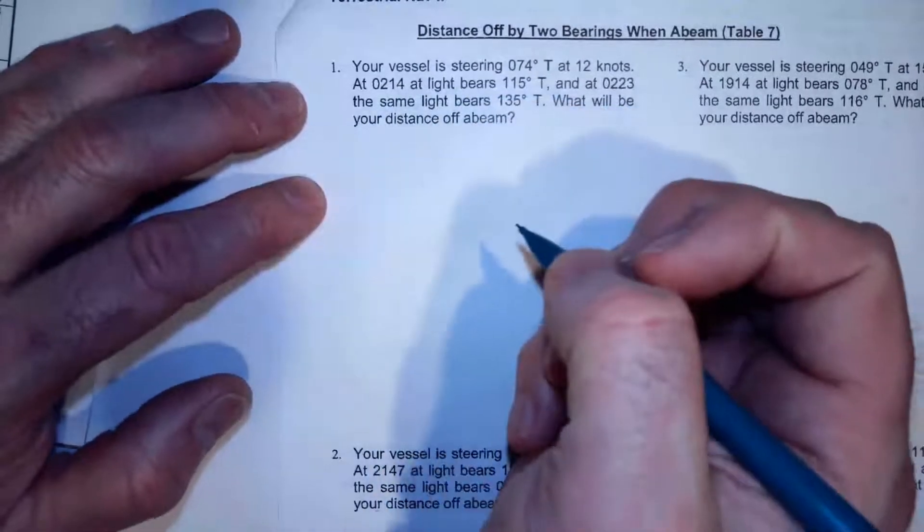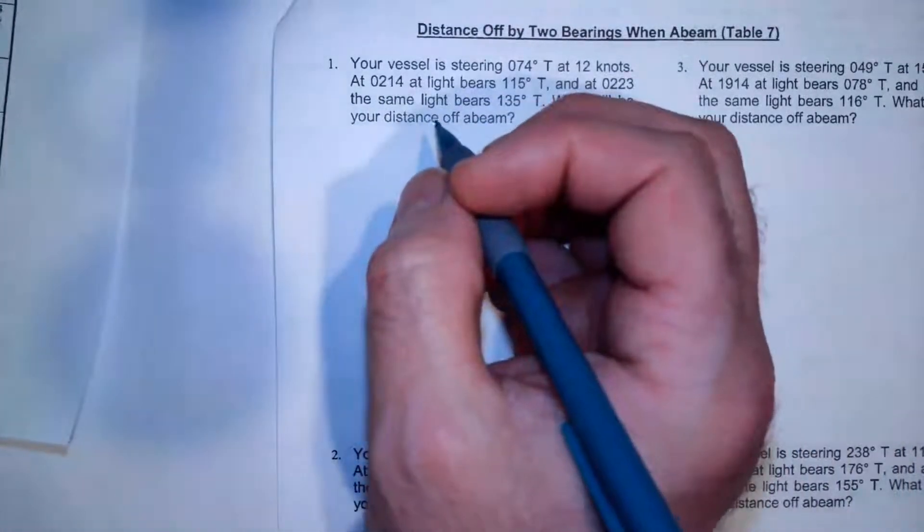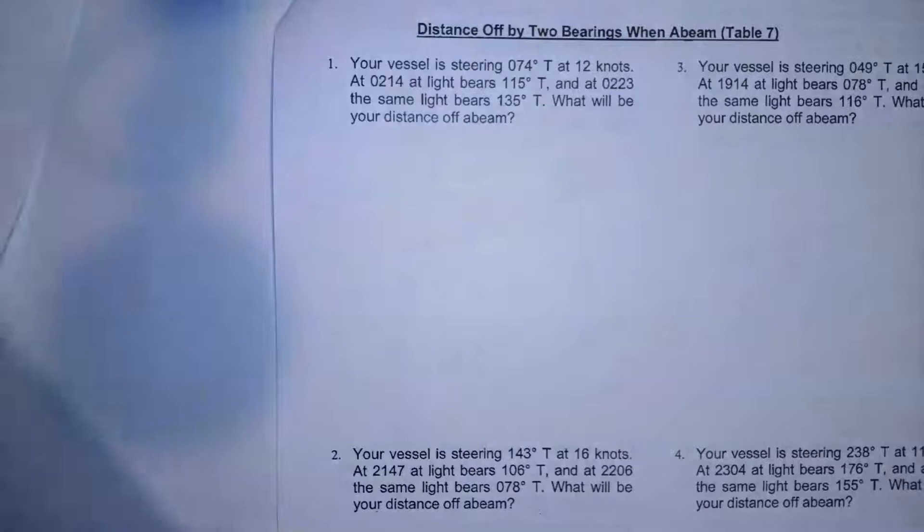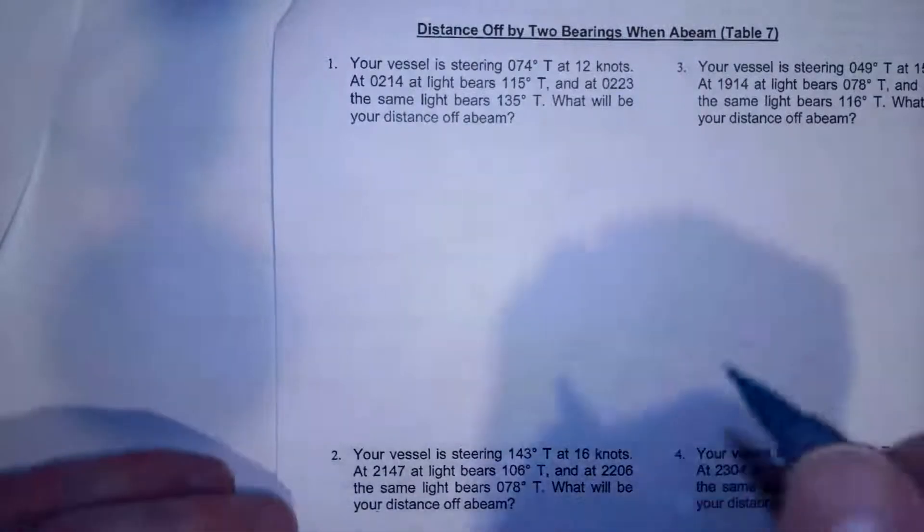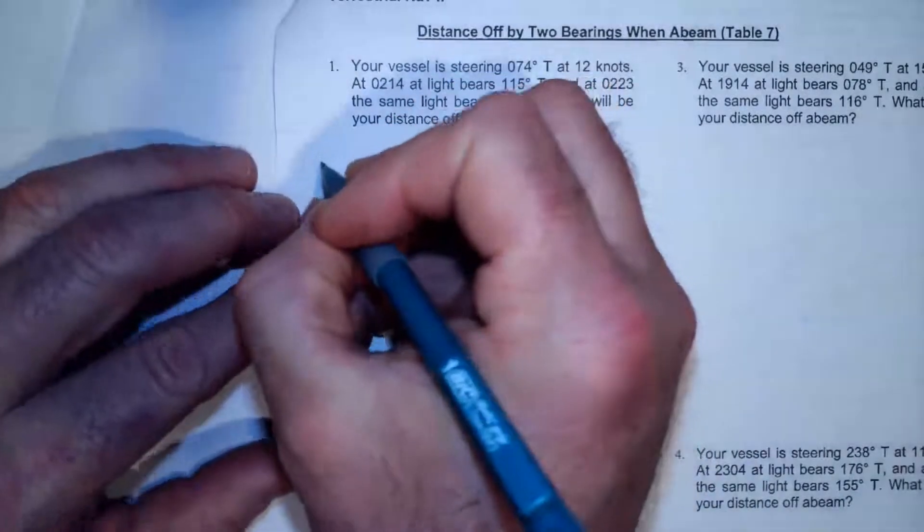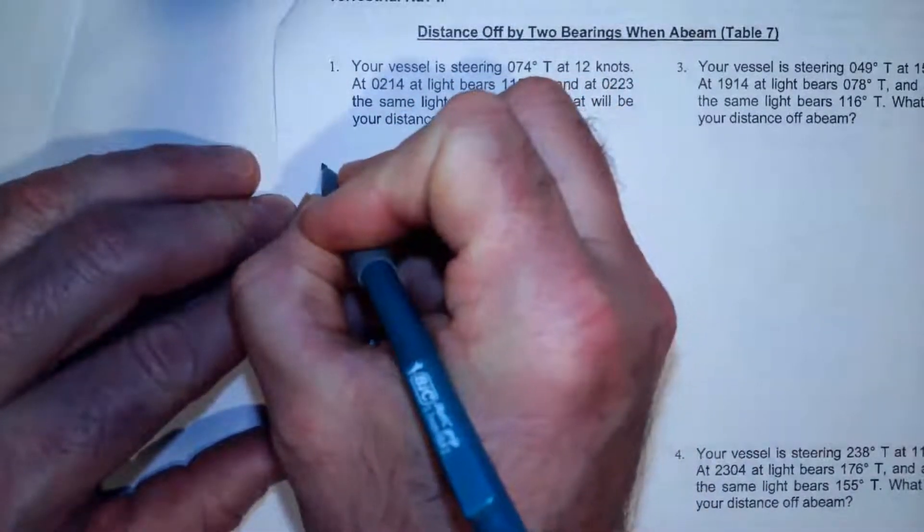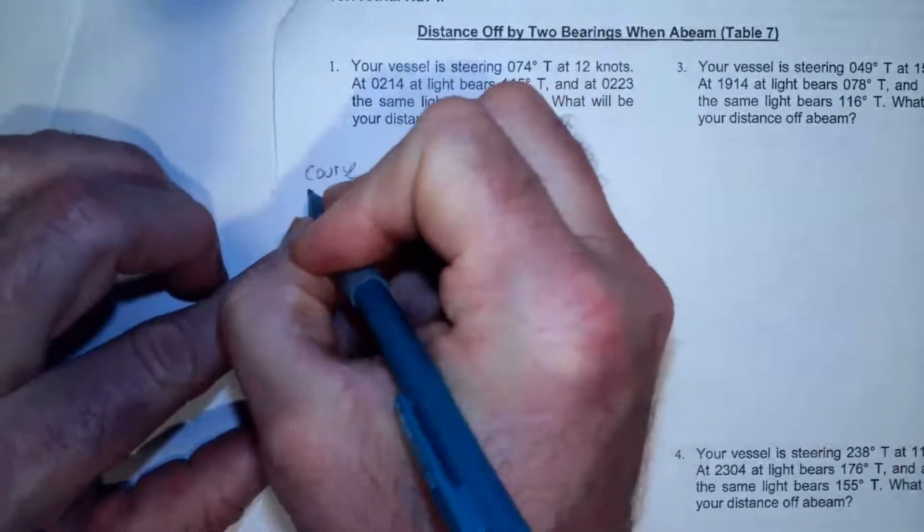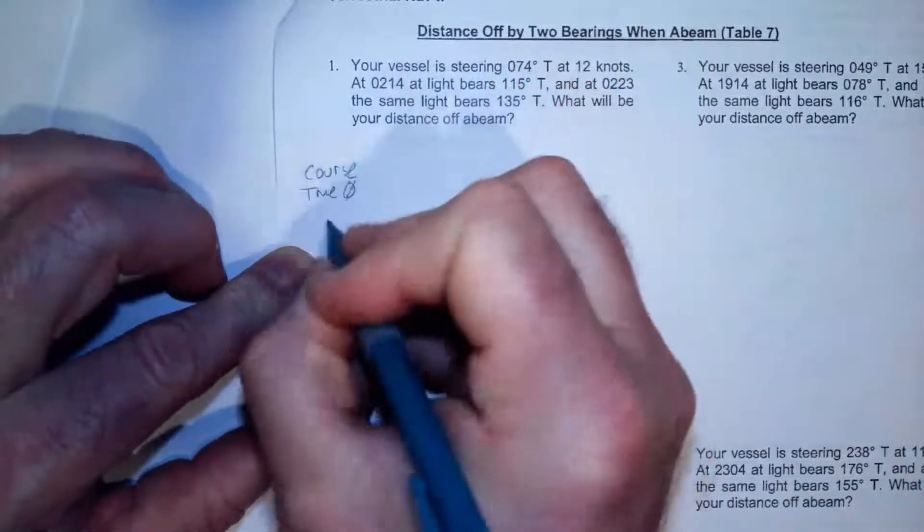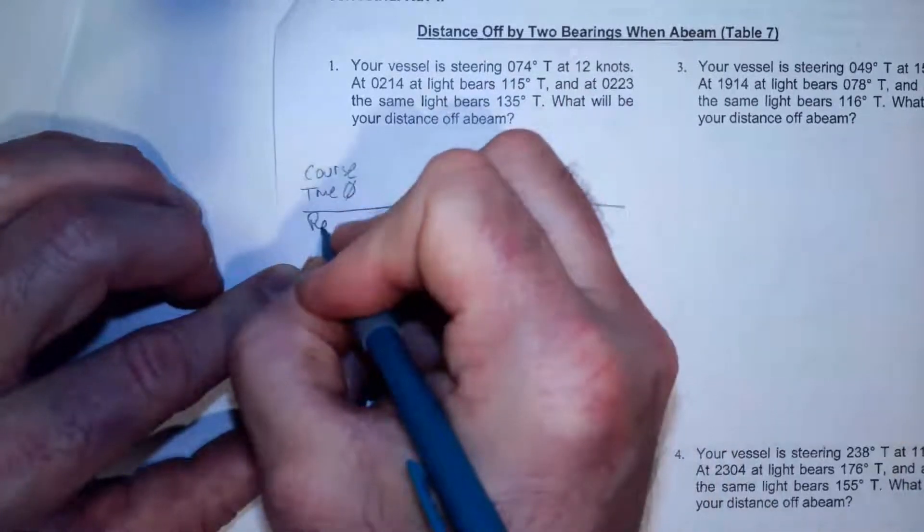Again, if you are not familiar with Table 7, you may want to watch a different video where I explain Table 7. This is just utilizing Table 7, so we're just going to get right into it. So I'm going to set up my little computer here as I always do for these problems. I'm referring to my notes over there on the side. Okay, so what I got going on here is I'm going to have my course, I'm going to have my true bearing, and then I'm going to calculate my relative bearing.